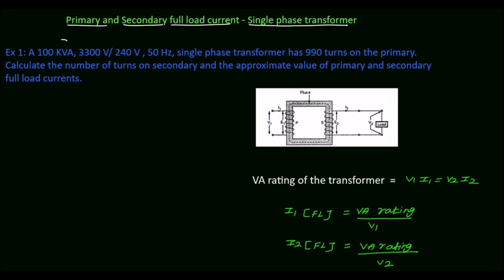The problem states the rating of the transformer is given as 100 kVA. If we convert kVA into VA, it is 100 into 10 to the power 3 VA. So the rating is 100 into 10 to the power 3 VA.